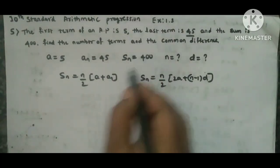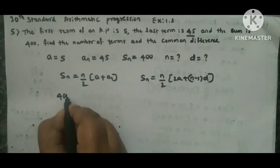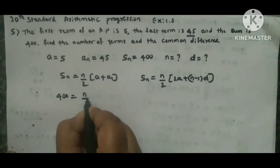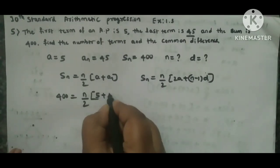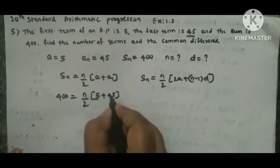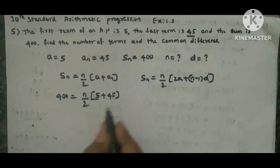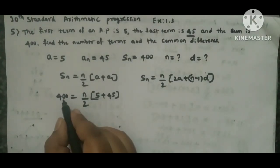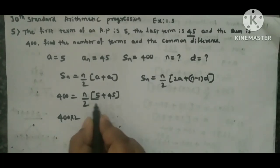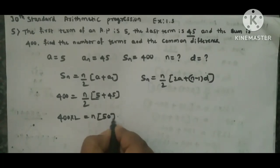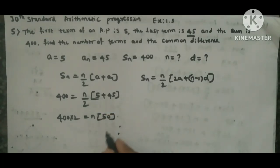So Sn is given here, that is 400 = n/2, I'll write as it is because we don't know that, (5 + 45). 5 + 45 is 50. This 2 I'll transfer right side, then 400 × 2 = n × 50.